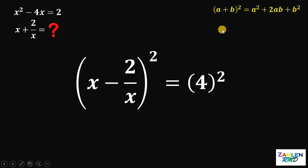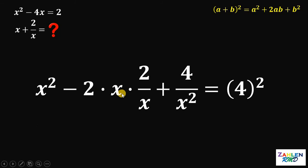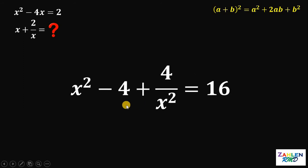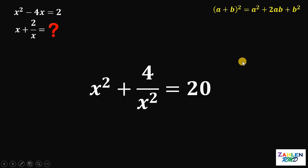We will use some identities. If we have (a plus b) squared, it equals a squared plus 2ab plus b squared. So the left-hand side becomes x squared minus 2 times x times 2 over x plus 4 over x squared, and the right-hand side gives us 16. Focusing on the middle term: negative 2 times x times 2 over x — x cancels out — giving us negative 4. Adding 4 on both sides, we get x squared plus 4 over x squared equals 20.